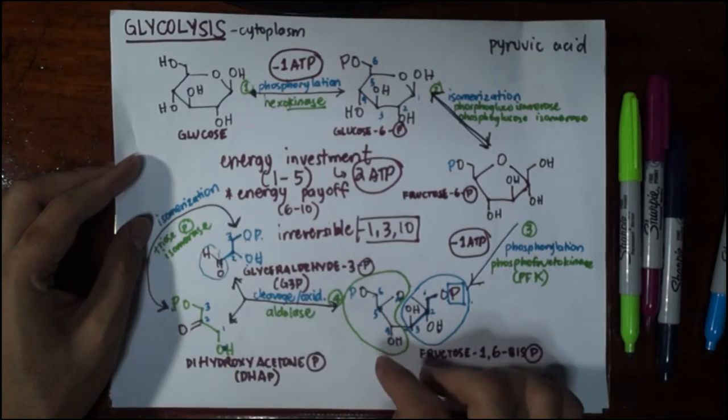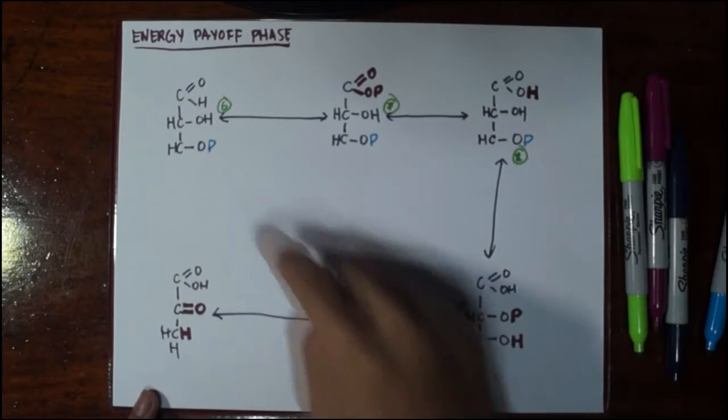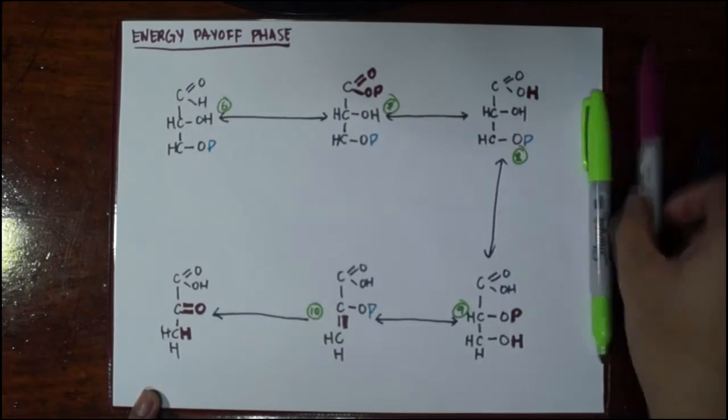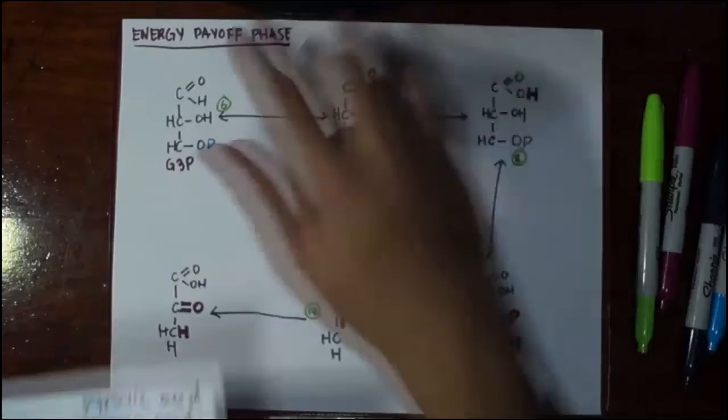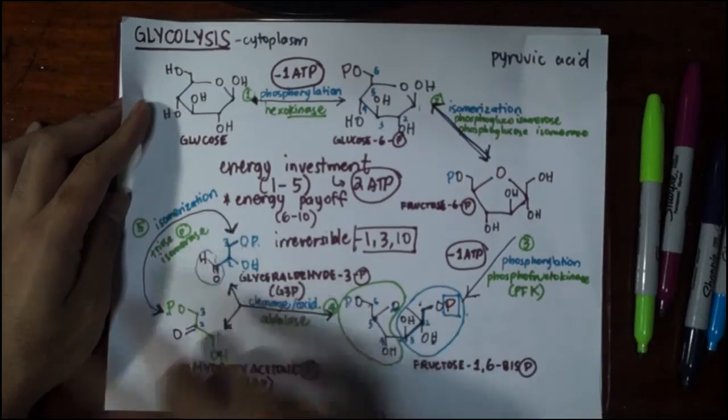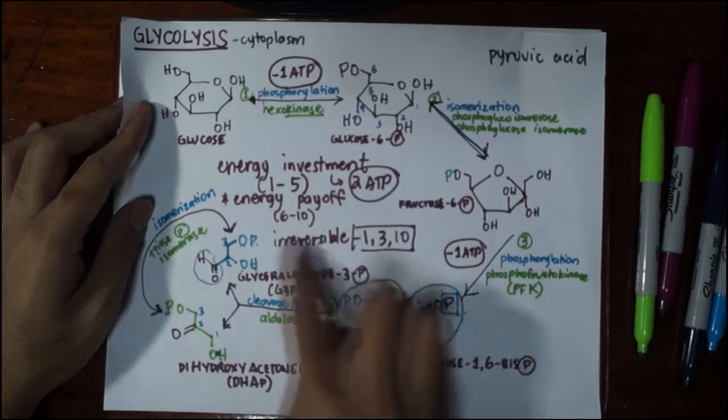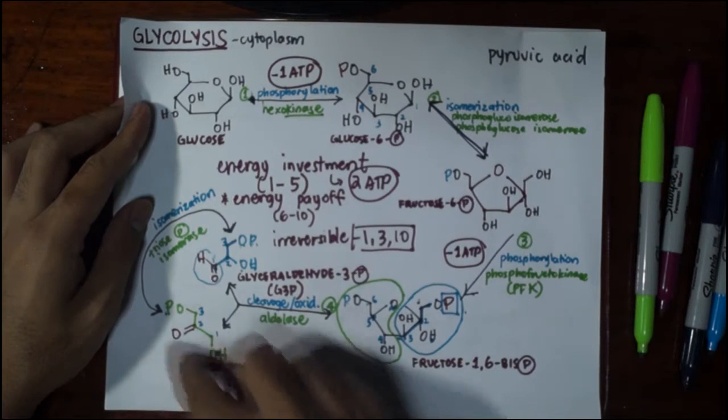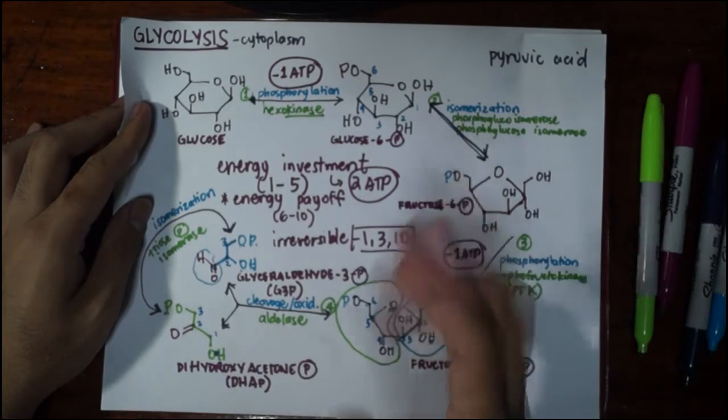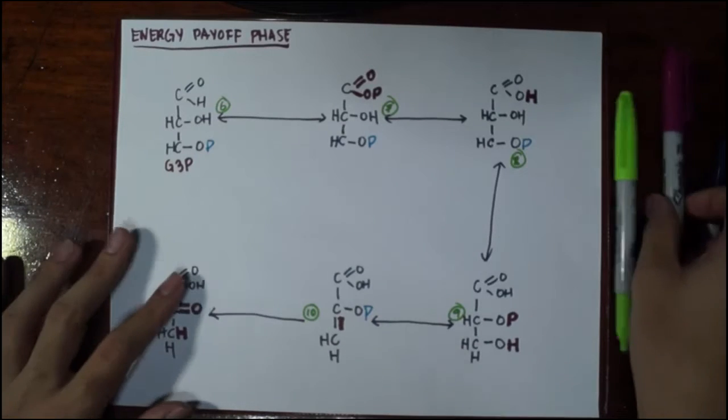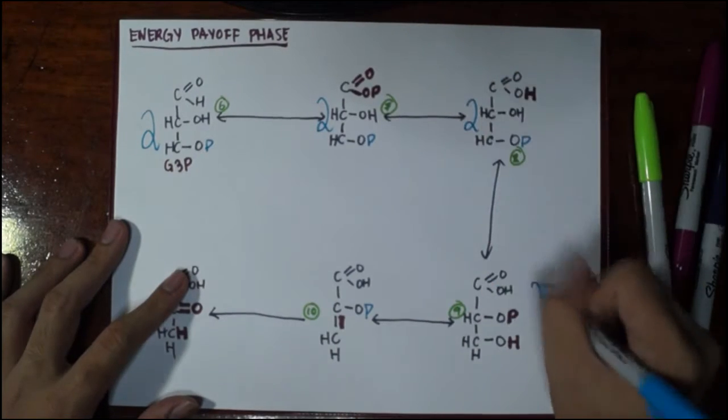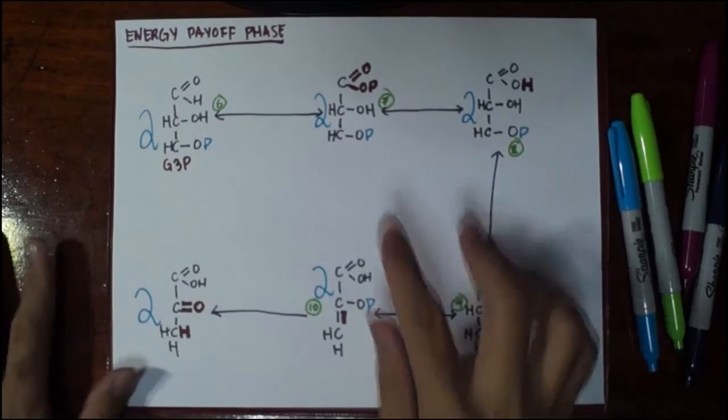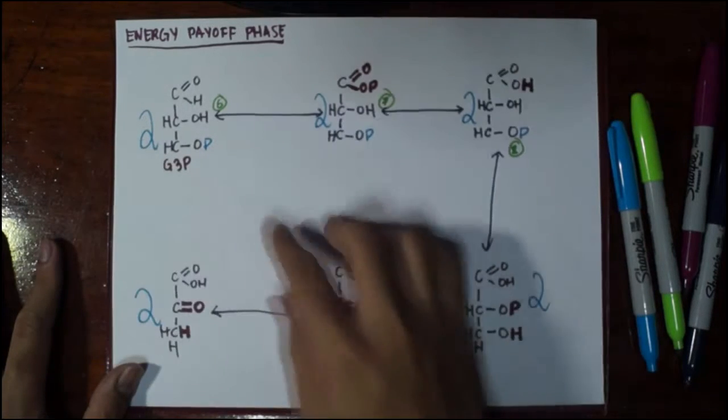...we have two molecules of three-carbon compounds. When we go to the energy payoff phase, the starting molecule in step number six is glyceraldehyde-3-phosphate, one of the products after aldolase reacted upon fructose-1,6-bisphosphate. The dihydroxyacetone phosphate actually has no place in the energy payoff phase, but that's no problem because triosephosphate isomerase allows DHAP to be converted to G3P. So you have two molecules of G3P and two molecules of everything else after. And if you're going to produce one ATP from this one, you multiply that by two, you get two ATP, so on and so forth.